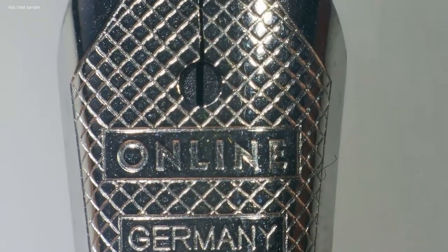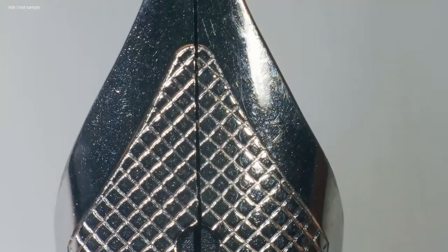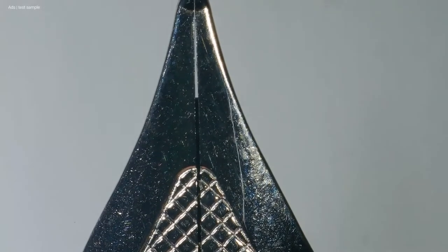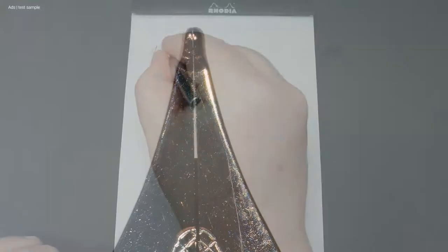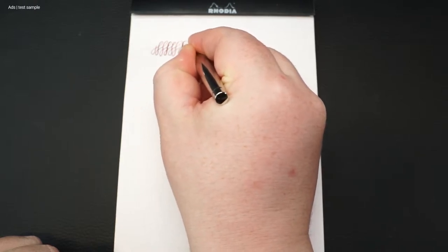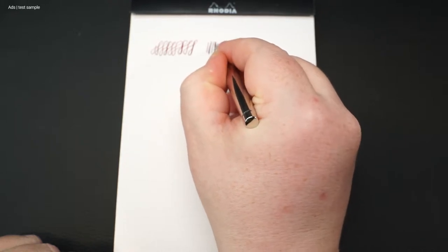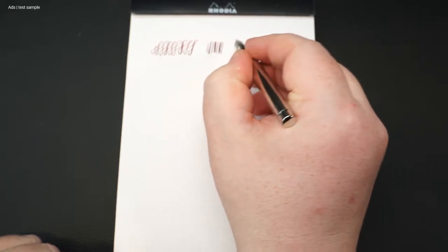Let's start with the extra fine nib. I will show you the nib in detail each time before. I do the writing sample with J. Herbin Rouge Grenat. And you can see, even the extra fine nib has some flex.